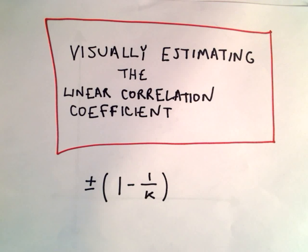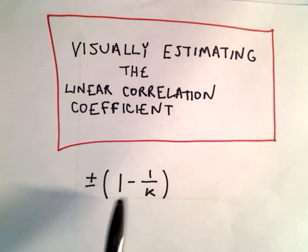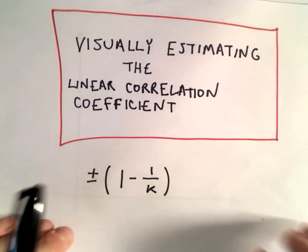Alright, in this video I'm going to show a quick way to estimate the correlation coefficient in certain cases. This is definitely an estimate, so if you need an exact value, by all means use the formula. What we're going to use is the formula positive or negative 1 minus 1 over k. We'll talk about how to figure out k.